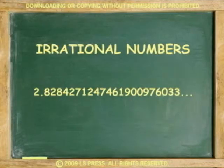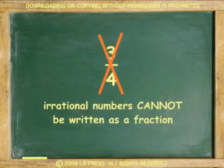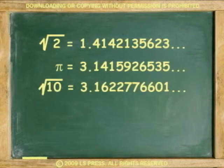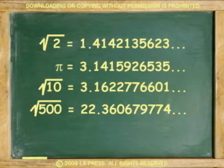Irrational numbers are non-repeating decimals — those numbers that cannot be written as a ratio of two integers. For example, the following are irrational numbers: square root of 2, pi, the square root of 10, the square root of 500.